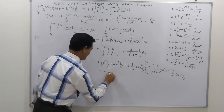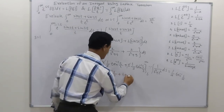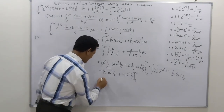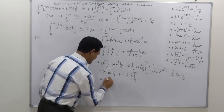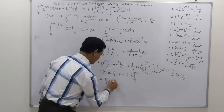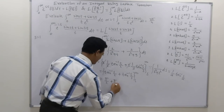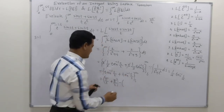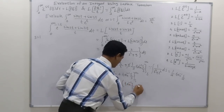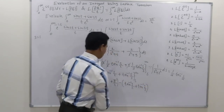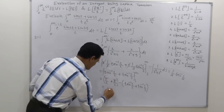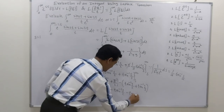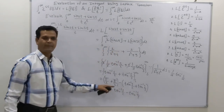Subtracting the lower limit, the result is π - tan⁻¹(s/2) - tan⁻¹(s/3). So L{(sin(2t) + sin(3t))/t} · e^(-st) = π - tan⁻¹(s/2) - tan⁻¹(s/3). Since the original example has e^(-t) rather than e^(-st), we put s = 1.